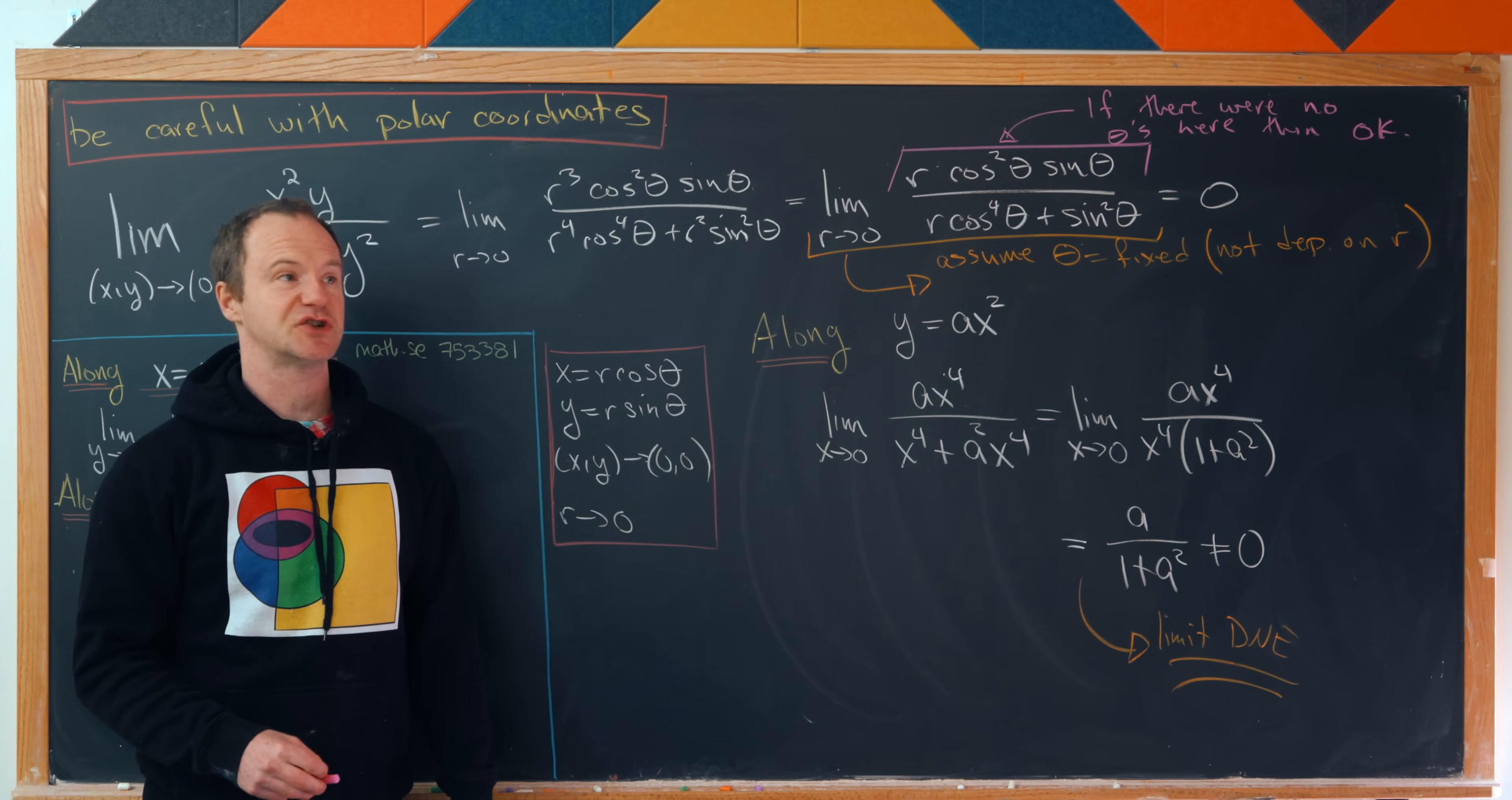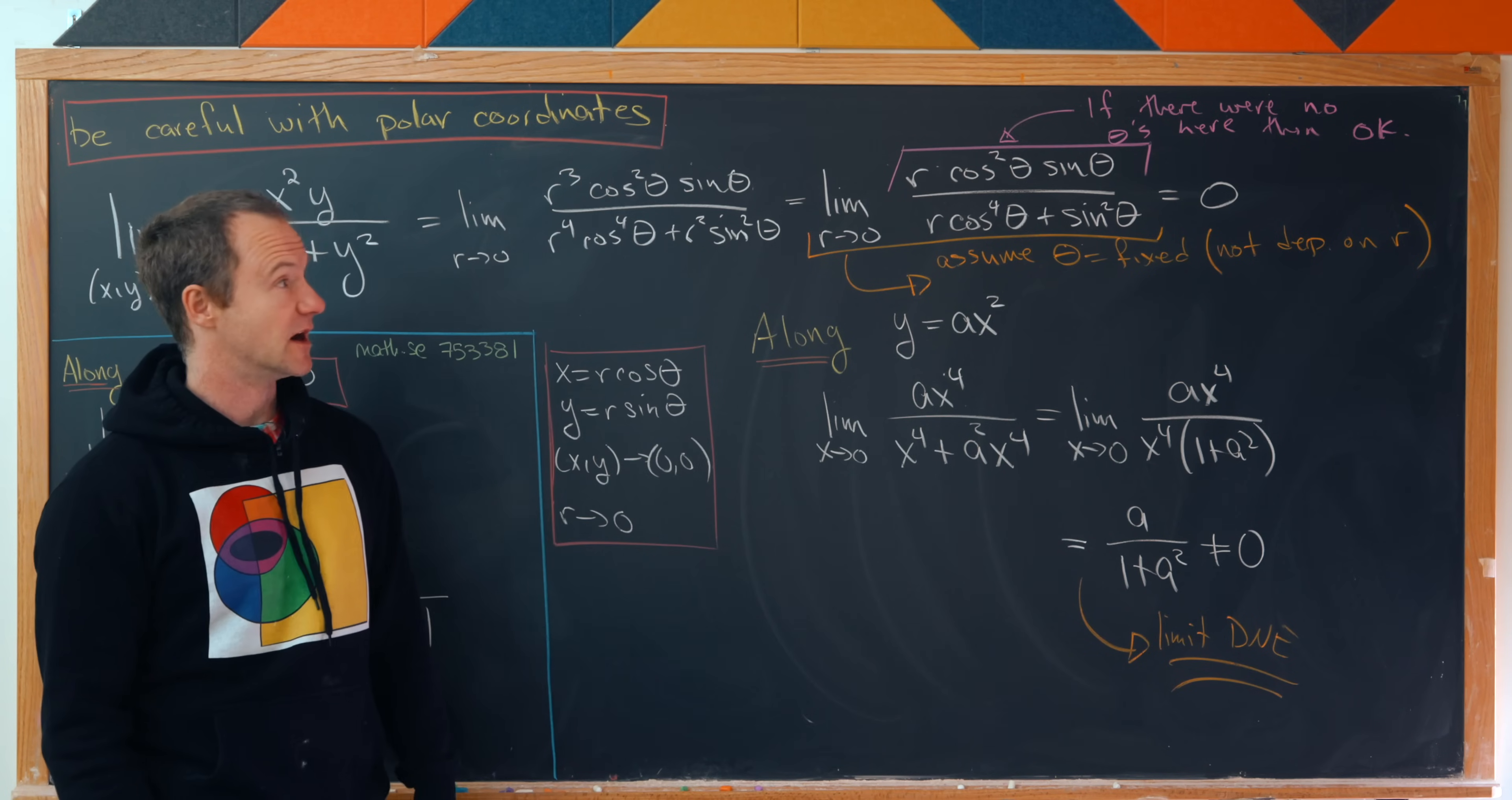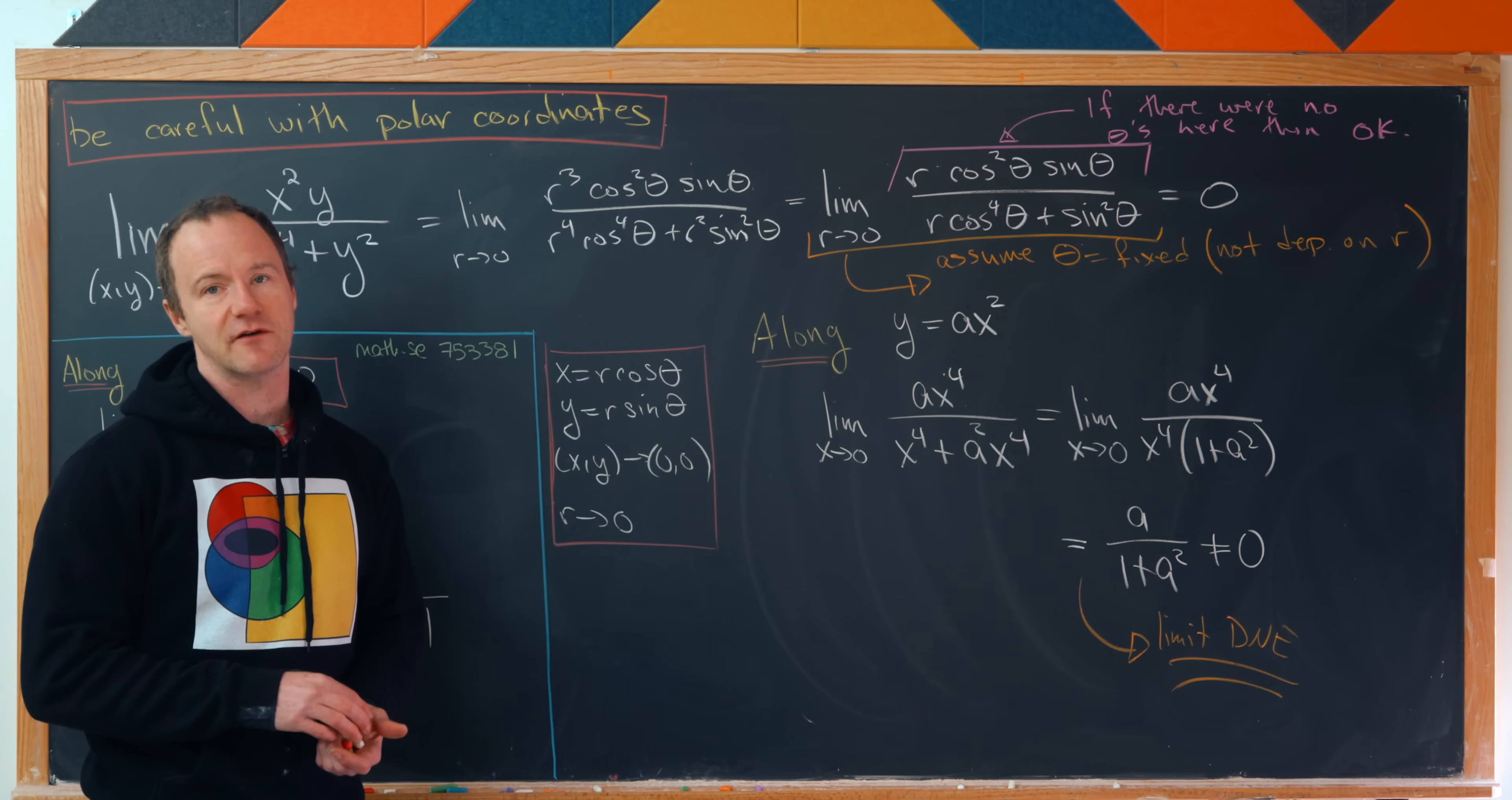So if the passage to polar coordinates eliminates the dependence of your function on theta, then this trick will always work. And that elimination will probably have to do with some sort of trig identities, so just be on the lookout for that. And that's a good place to stop.